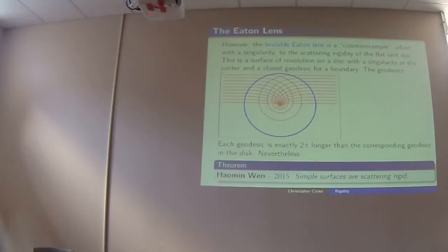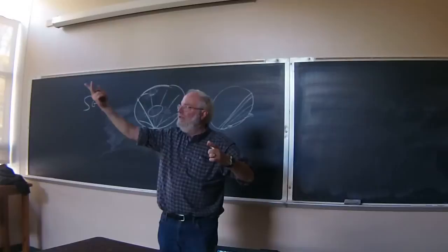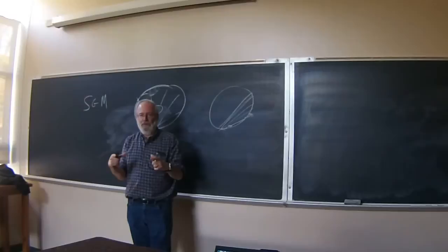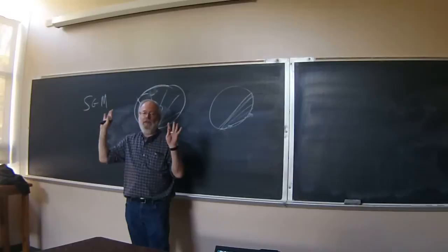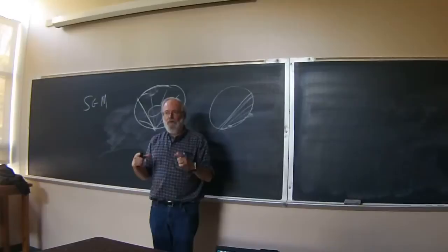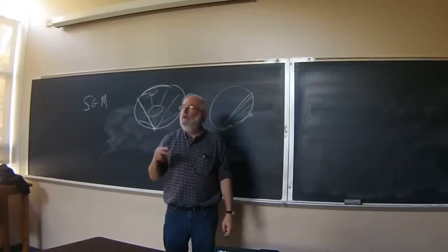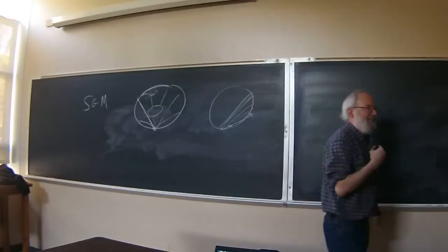My student Ho-Min Wen proved that simple surfaces are in fact scattering rigid. Simple means convex boundary, two-dimensional, topological ball — includes the flat disk. He proved that if you don't allow a singularity, then the scattering data does determine the lens data. The rigidity part follows because Pestov and Uhlmann had already proved that simple two-dimensional manifolds are boundary rigid. So once you know the lens data, you know the boundary data. He had to show the singularity phenomenon doesn't happen without a singularity.